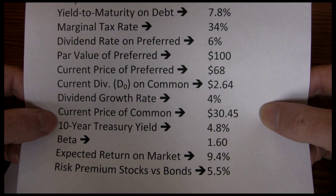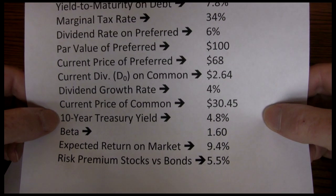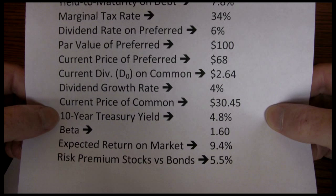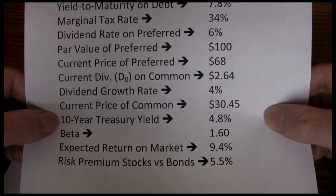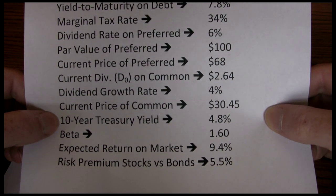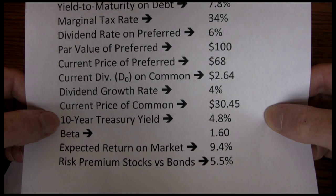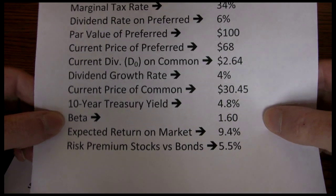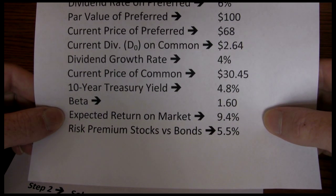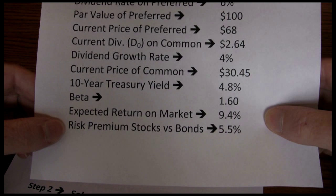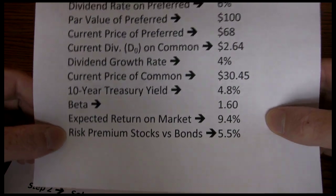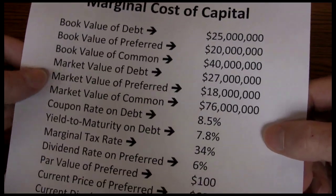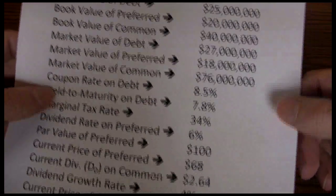The current price of the common stock is $30.45. The 10-year treasury yield, which we'll use as the risk-free rate of interest — sometimes that may just be given as the risk-free rate or as a treasury yield, but the 10-year treasury yield is what's typically used. Beta is 1.60, and then we have the expected return on the market and the risk premium for stocks versus bonds. That's all the information we're going to need in order to work through the marginal cost of capital in our example.